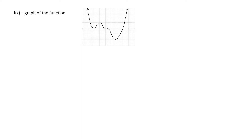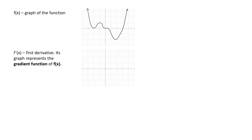Let's start off with the graph of the function f of x as shown on the right. From this graph we're going to sketch the graph of the first derivative f dash x. f dash x is a graph that represents the gradient function of f of x. What that means is that if you were to draw tangents along the curve, the values of the gradients of these tangents is going to change for different values of x. So in sketching f dash x we're concerned about plotting the values of these gradients.